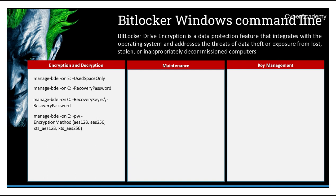We can choose any of the encryption methods, and then turn on encryption while giving a startup key on an external drive such as a USB drive. The purpose of the startup key is to ensure that until it is provided to the operating system, it will not allow loading of OS files into memory, preventing the operating system from loading for any user.